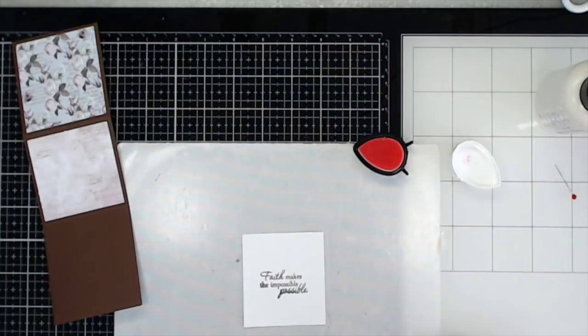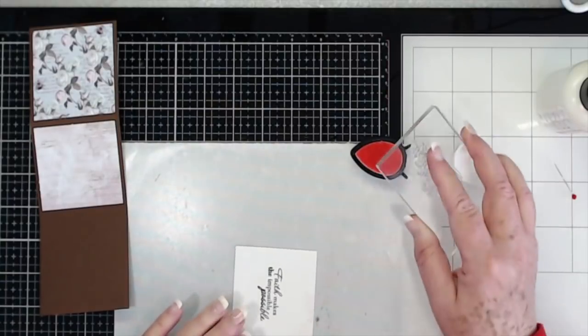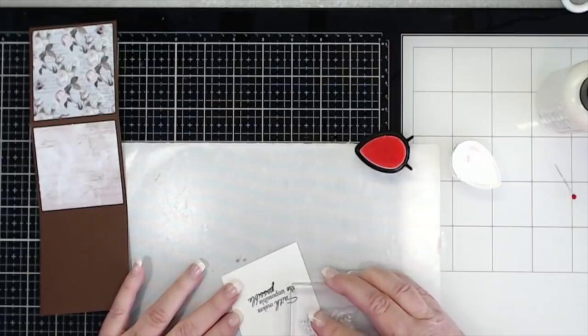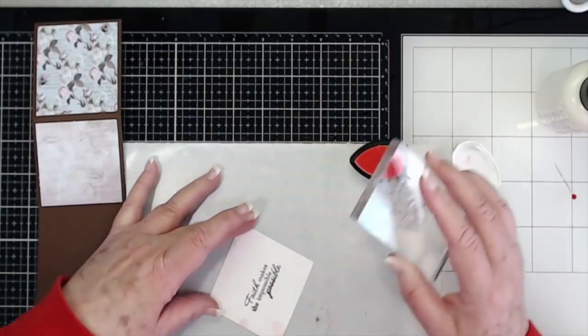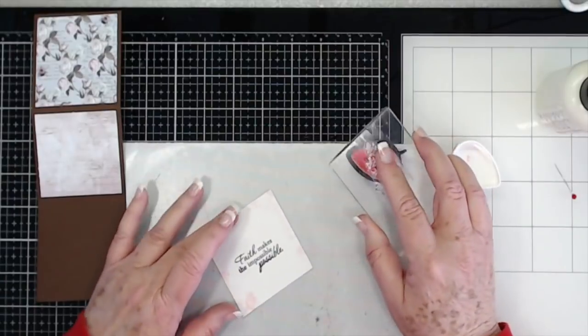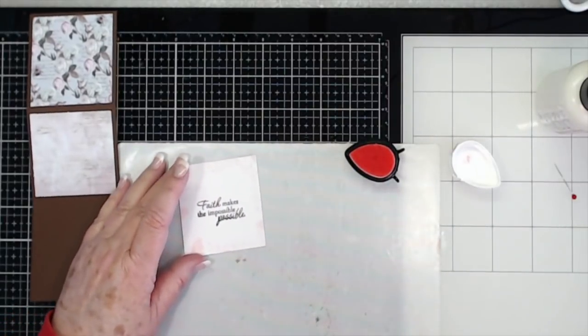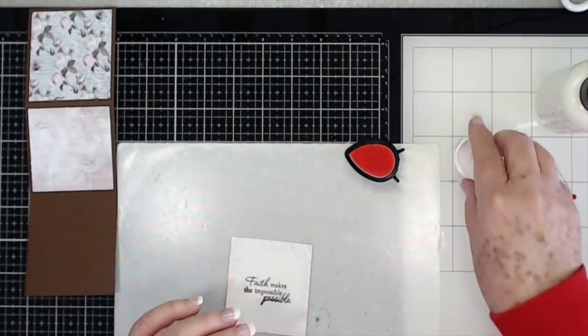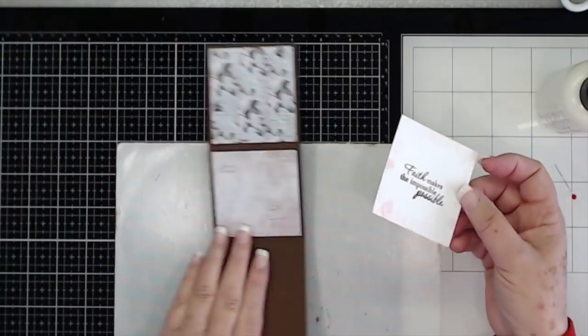And then we're going to come back in with this little stamp. I think I'll grab another block since that one's got ink on it. And what we're going to do is just kind of go around this with just the branches, not necessarily the bird but just the branches. Got a little bit of the bird there but that's okay. There we go, all right, clean this up. That's cute isn't it.